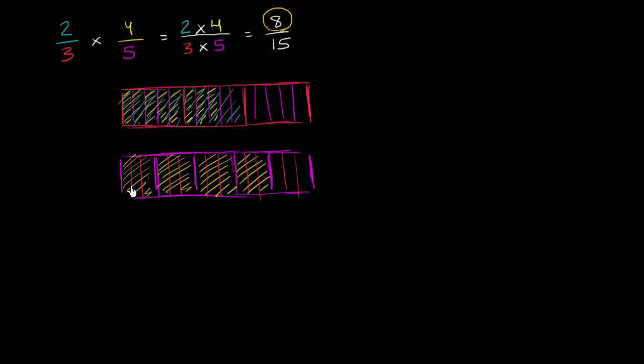you're going to be taking 8 of it. So you're going to be taking 1, 2, 3, 4, 5, 6, 7, 8. Or 8 of the fifteenths now. So either way you get to the same result. One way you're thinking of taking 4 fifths of 2 thirds. Another way you could think of it is you're taking 2 thirds of 4 fifths.